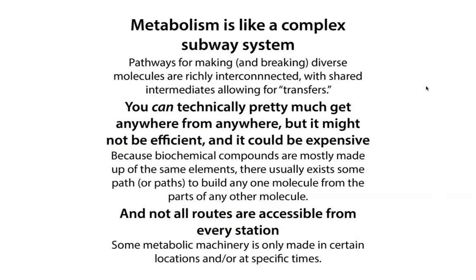There usually exists some path to build any molecule from the parts of any other molecule. But not every route is accessible from every station. Some metabolic machinery is only made in certain locations and at specific times. Later in the course, we'll talk about how things can be regulated, how our bodies regulate the action of various enzymes and pathways, and how certain things only happen in our liver or kidneys.